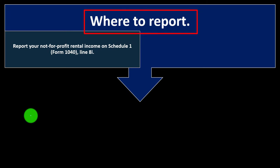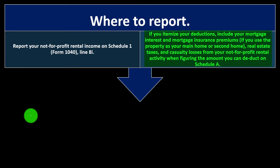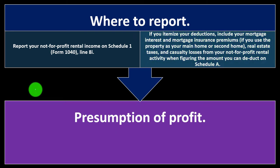Report your not-for-profit rental income on Schedule 1, Form 1040, Line 8-I. If you itemize your deductions, include your mortgage interest, mortgage insurance premiums — if you use the property as your main home or second home — real estate taxes, and casualty losses from your not-for-profit rental activity when figuring the amount you can deduct on Schedule A.